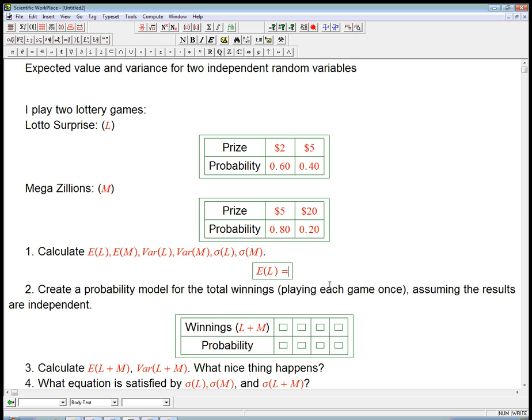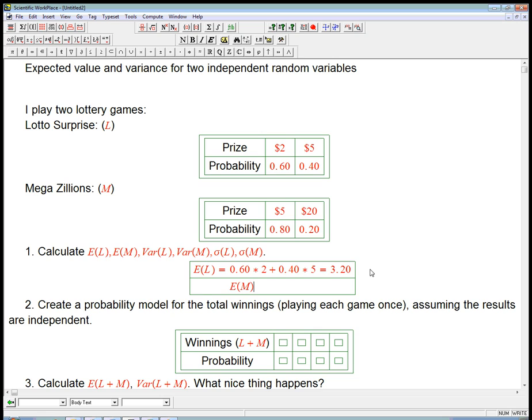So E of L, that's just going to be 60% chance of winning $2, plus 40% chance of winning $5, and that's $1.20 plus $2, and so that's $3.20. The expected winnings for Mega Millions is going to be 0.8 times $5, plus 0.2 times $20, so that is $4 plus $4, that's $8. Let me make sure I put the units in, those are both in dollars.